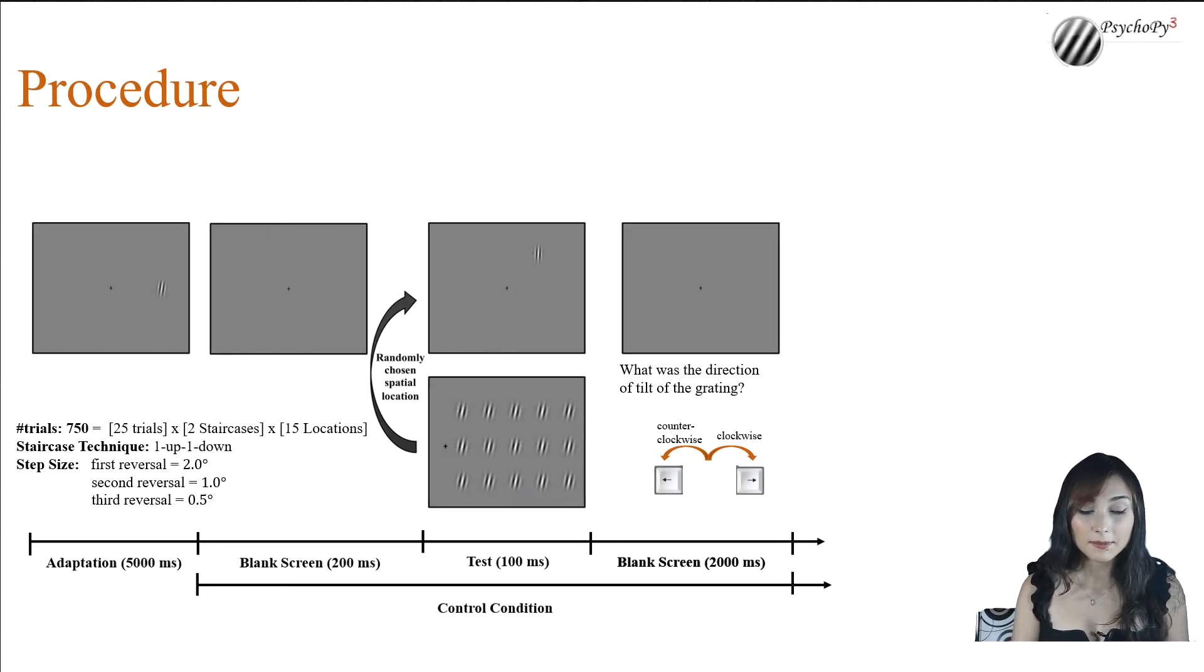A typical experimental trial started with 5 seconds of adaptation to an adapter grating that's followed by 200 milliseconds of a blank screen. Then, a test grating appeared at a randomly chosen spatial location for 100 milliseconds. Then, 2 seconds blank screen presented to participants where participants needed to indicate the perceived tilt of the grating by pressing either left or right arrow key button on a keyboard.